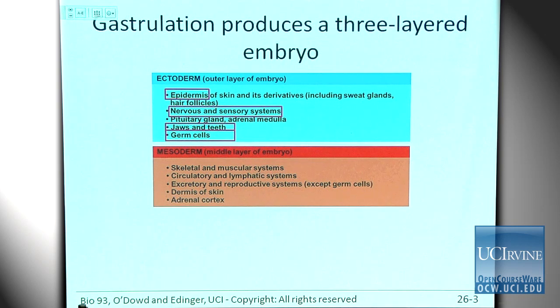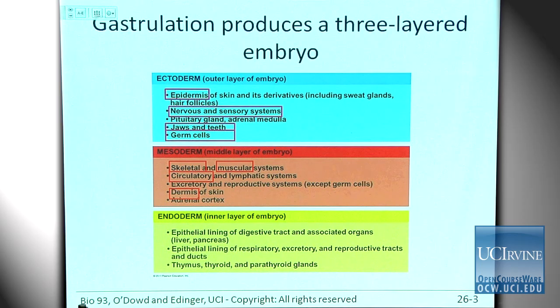Mesoderm — 'meso' means something like 'in the middle.' These are the cells in the middle of this three-layer embryo. They become most of the skeletal system except the jaws and teeth, muscles, the circulatory system, and the dermis of the skin — the layer underneath the epidermis. Then there's the endoderm, on the inside of the embryo, which makes the epithelial lining of your digestive tract and respiratory system.